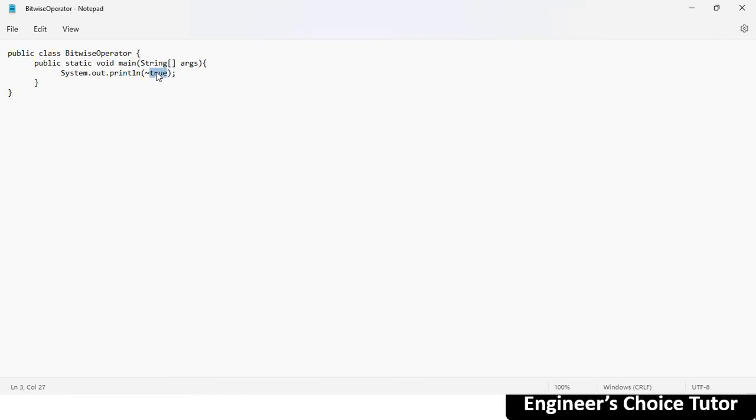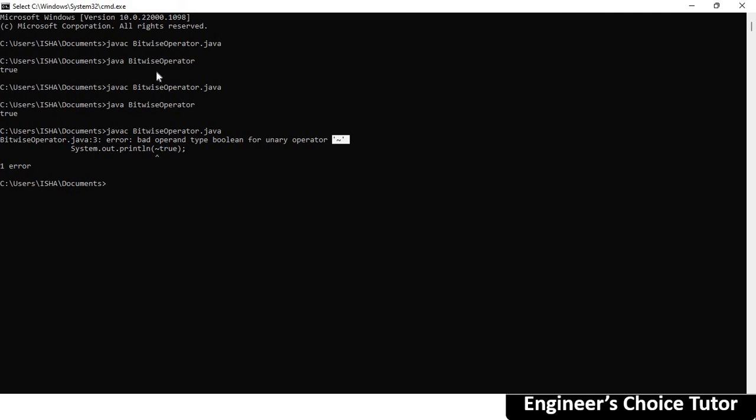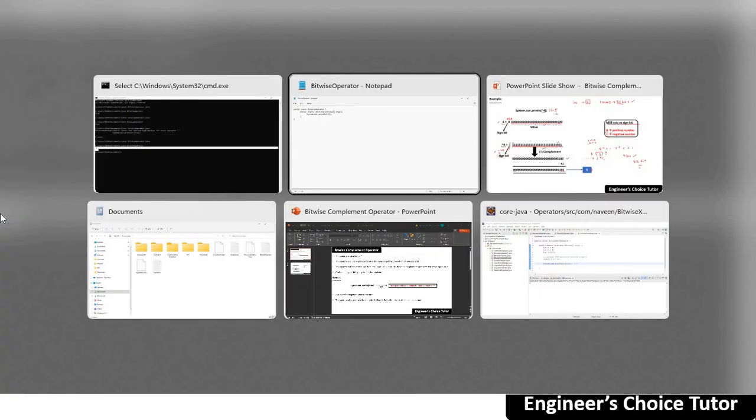If you don't believe, let me show you. Go here and write 4. Save this. Go to the command line, compile the program. Run the program, java BitwiseOperator. See, you got minus 5. That's what I have explained to you. You will get minus 5 in the output.